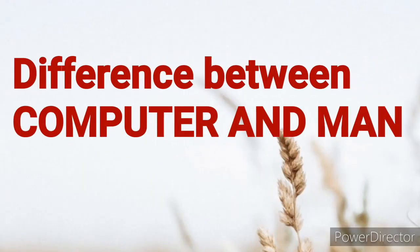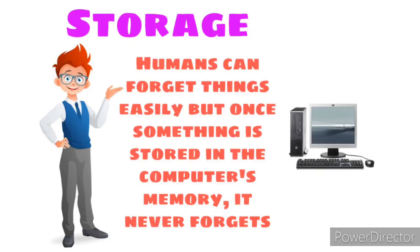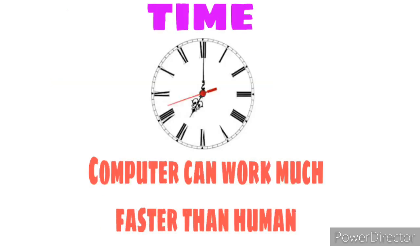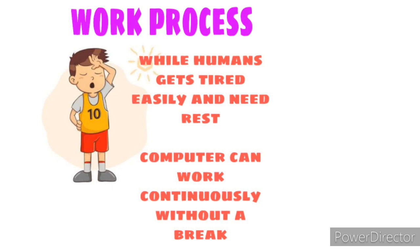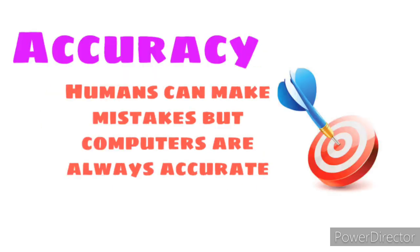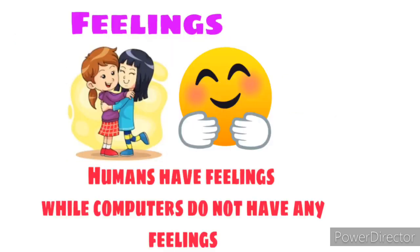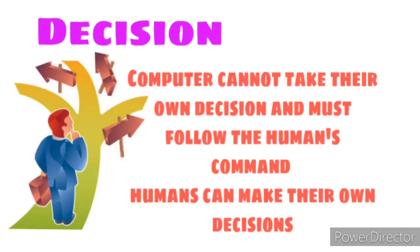Difference between computer and human: Storage — humans can forget things easily, but once something is stored in the computer's memory, it never forgets. Time — a computer can work much faster than a human. Work process — while humans get tired easily and need rest, a computer can work continuously without any break. Accuracy — humans can make mistakes, but computers are always accurate. Feelings — humans have feelings, while computers do not. Decision — a computer cannot take its own decision and must follow human commands, while humans can make their own decisions.